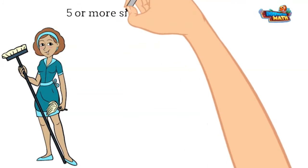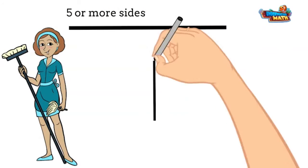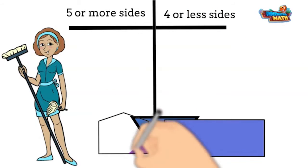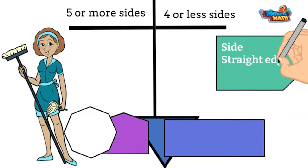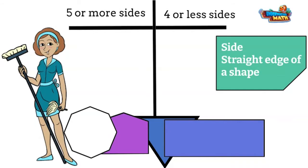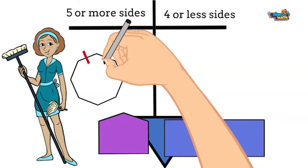My first job is to classify and sort these polygons into shapes with five or more sides and shapes with four or less sides. A side is the straight edge of a shape. We will start with this shape here. We are looking at the straight edges.